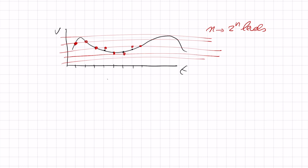The sample time Ts is equal to 1 over the sample frequency. The step size is 1 LSB — least significant bit. So in order to make a very good analog-to-digital converter, we like a very high sample rate, but also a lot of bits, so for the same window — say 1 volt — you want many available levels.